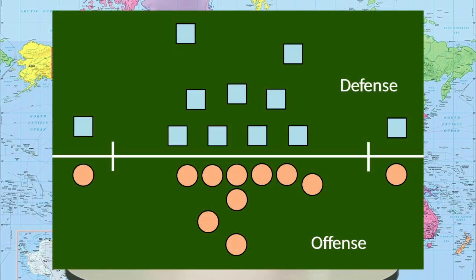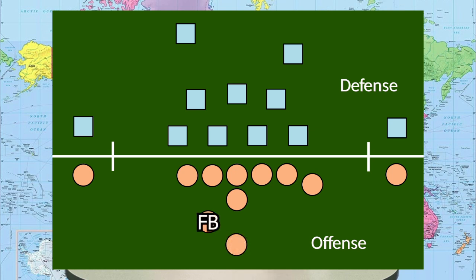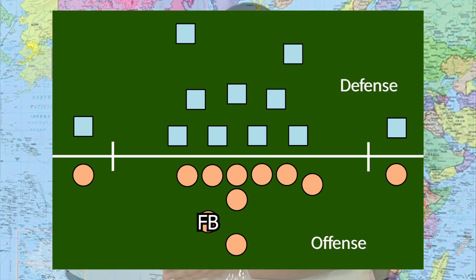Let's talk about the positions in football. The primary positions on offense start with the quarterback — the leader of the offense, either calling plays or executing the coach's play calls, lining up behind the center. You have the halfback, running back, or tailback — running the ball, finding the holes and gaps. You also have the fullback, which is a larger running back who can also serve as a blocker.